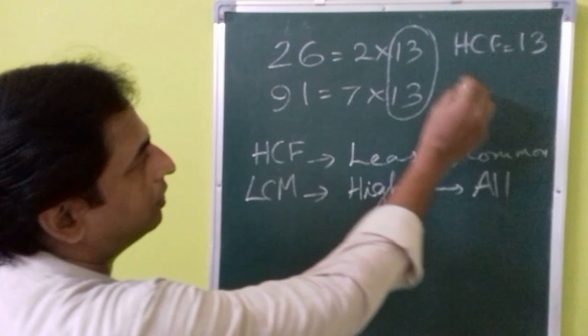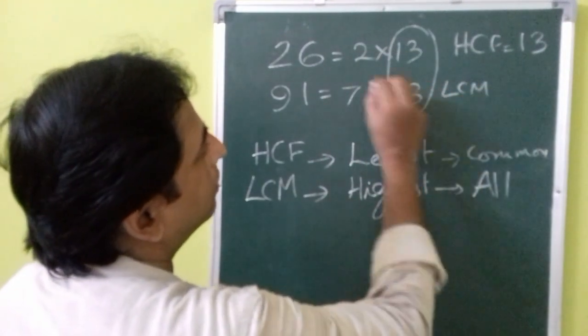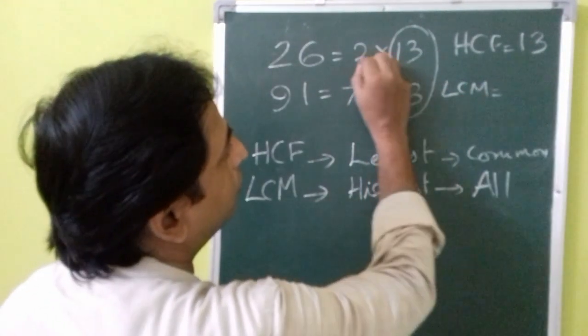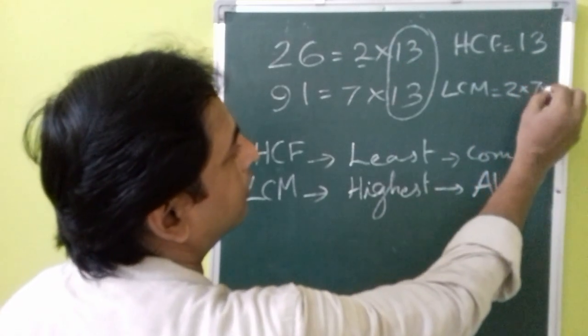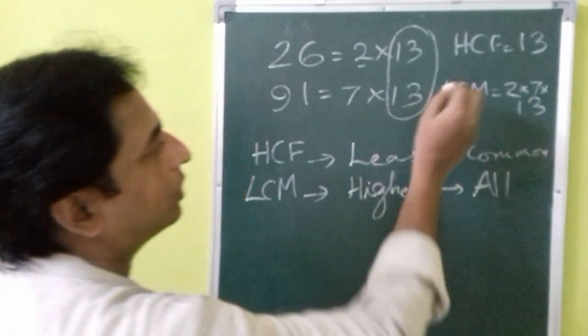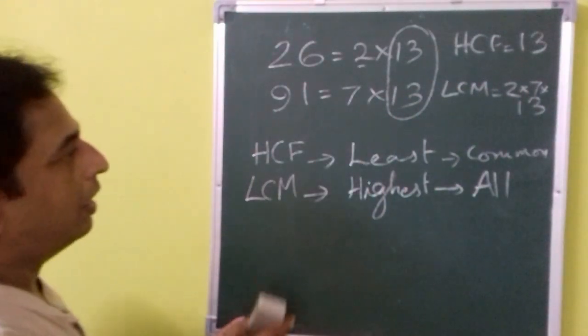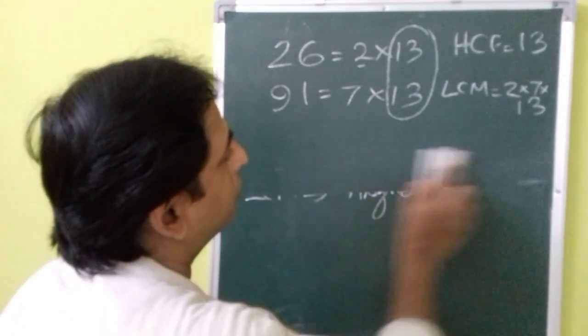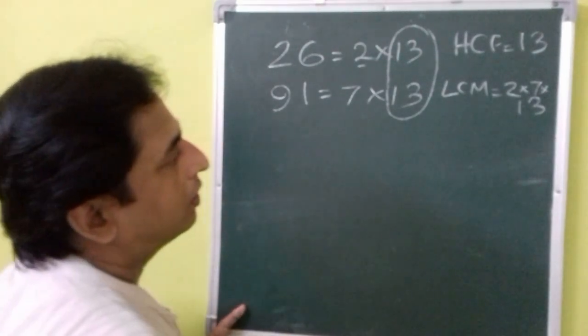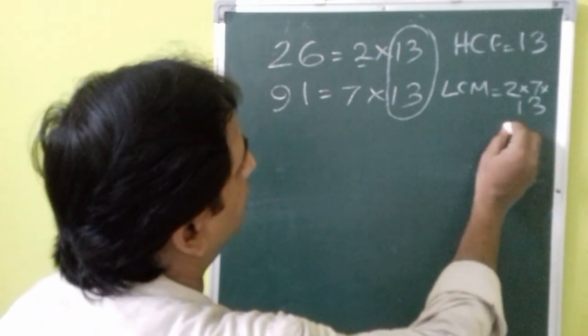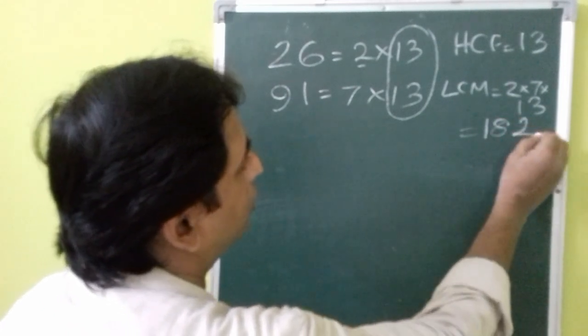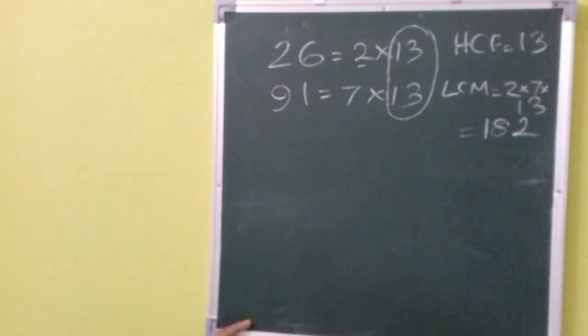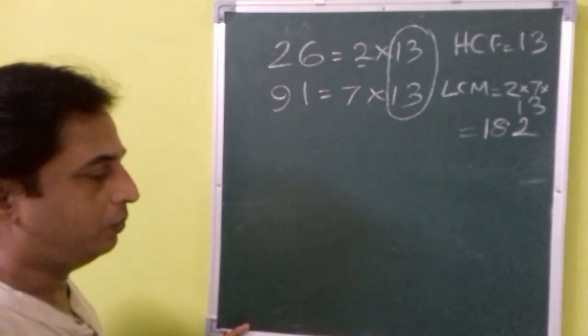So here, all the factors include 2, 7, and 13. So you will have to multiply all these to get the LCM. So 182. LCM is 182.